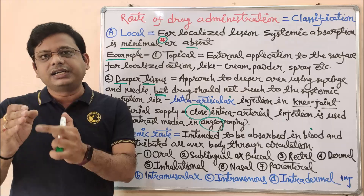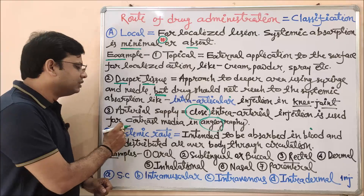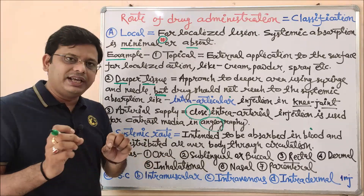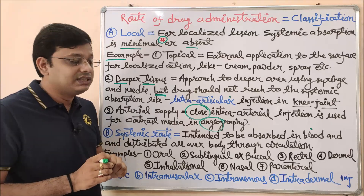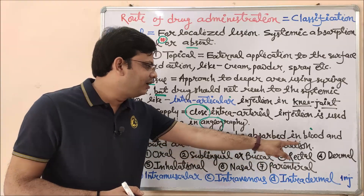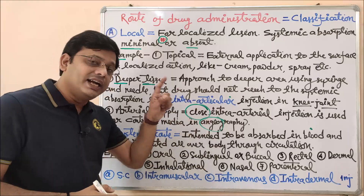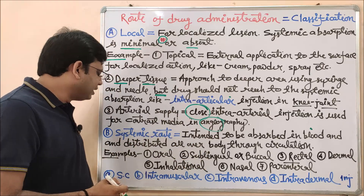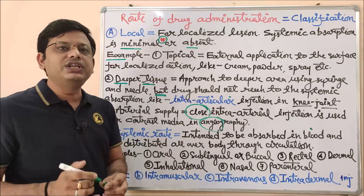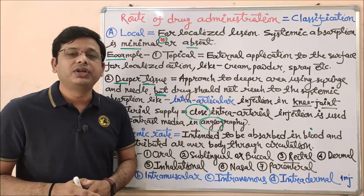Coming to the examples of systemic routes: oral, sublingual or buccal, rectal, dermal, inhalational, nasal, and parenteral. Under parenteral, we have subcutaneous, intramuscular, intravenous, and intradermal injection. These are the examples of systemic routes of drug administration, and from the next classes we will continue focusing on this.